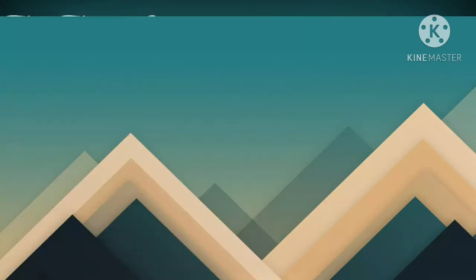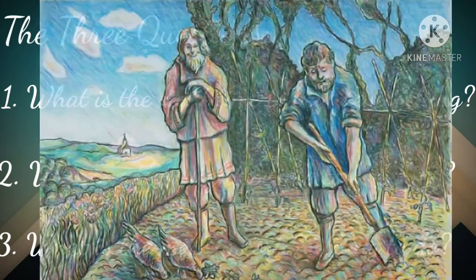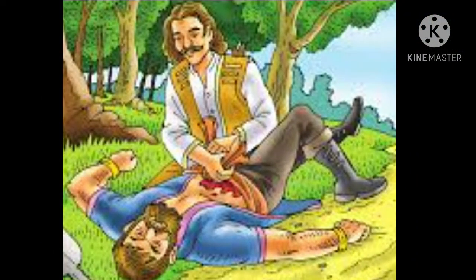We already know what the three questions were that arose in the mind of the Tsar. Not being satisfied with the answers he gets from his learned men, he goes to the forest to seek answers from the hermit. But in spite of spending the whole day with the hermit and digging two beds for him, the King doesn't get an answer. He makes up his mind to return, as he feels the old hermit doesn't seem to have the answer. But as he's about to do so, a wounded bearded man makes an entry into the scene, and we come to know that this man is actually his enemy.